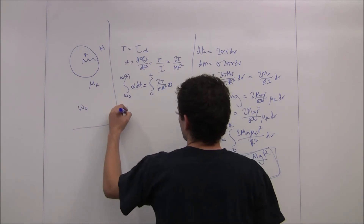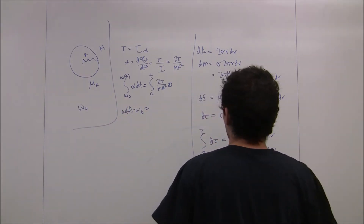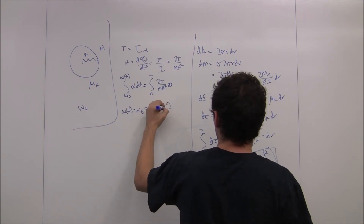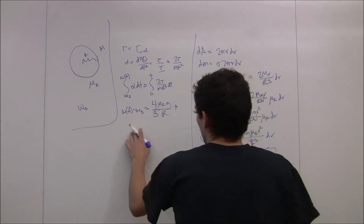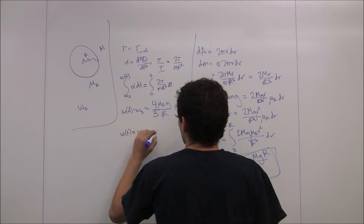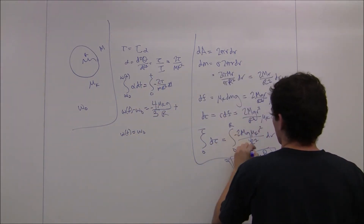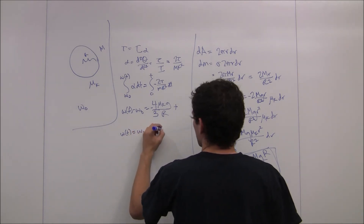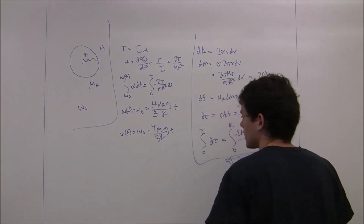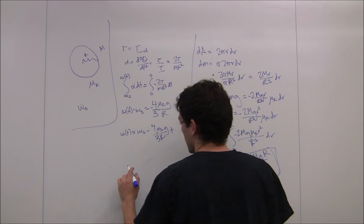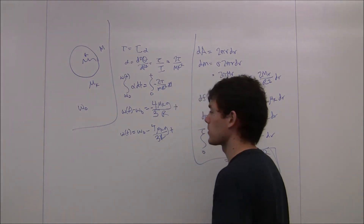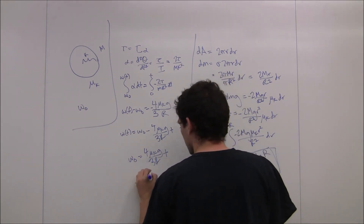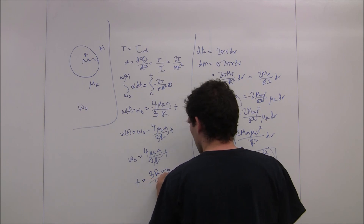This tells us that omega of t minus omega naught equals negative 4 over 3 times mu sub k g over R times t, where the negative sign is because friction always opposes motion. So omega at time t equals omega naught minus 4 mu sub k g over 3R times t. Setting omega at time t equal to zero, which is when it comes to rest, we get omega naught equals 4 mu sub k g over 3R times t, so t equals 3R omega naught over 4 mu sub k g. That is the time at which the spinning puck comes to rest.